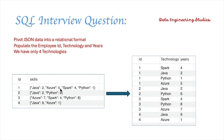For example, employee ID 1 knows four technologies: Java, Azure, Spark, and Python. He has two years of experience in Java, five years in Azure, four years in Spark, and one year in Python. Employee 2 knows two technologies, Java and Python. He has two years experience in Java and six years experience in Python.